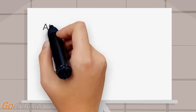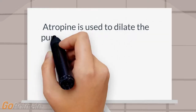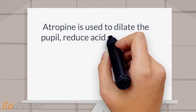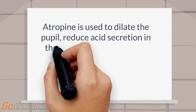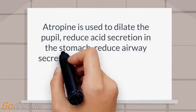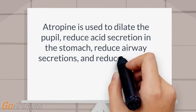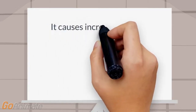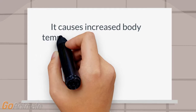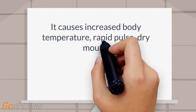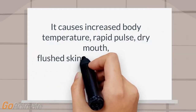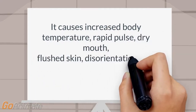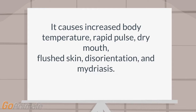And number 1: Atropine is used to dilate the pupil, reduce acid secretion in the stomach, reduce airway secretions, and reduce urgency in cystitis. It causes increased body temperature, rapid pulse, dry mouth, flushed skin, disorientation, and mydriasis.